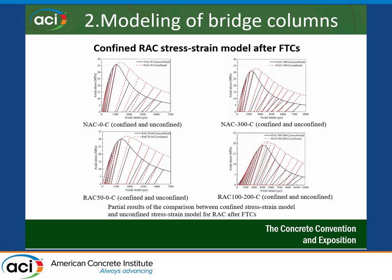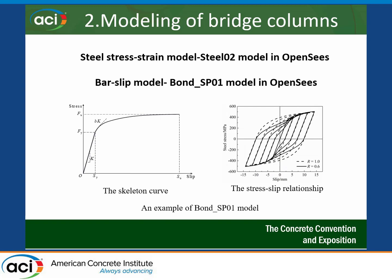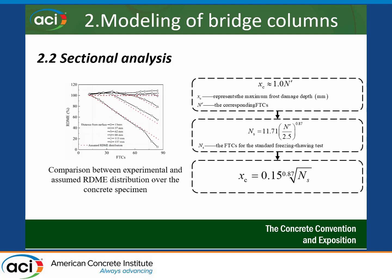For the confined concrete, specimens tested after freeze-thaw exposure were modeled in OpenSees, showing very good validation with the experiment. For the steel model, the Steel02 model available in OpenSees was used, and the bond slip model was also used for modeling the concrete column under freeze-thaw cycles. Sectional analysis was conducted to evaluate how frost damage depth changes the behavior of the cross-section.